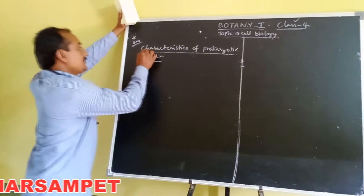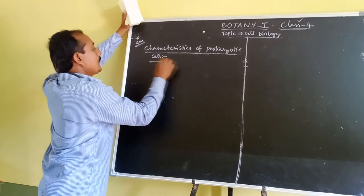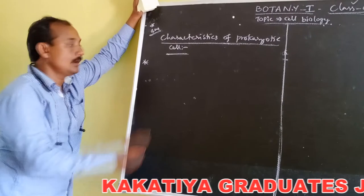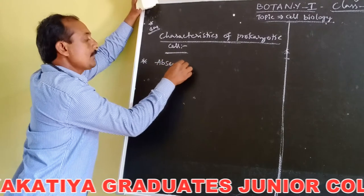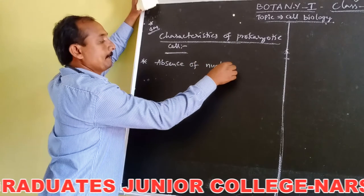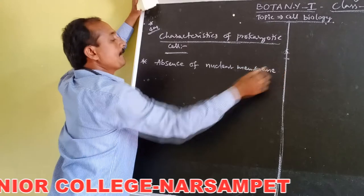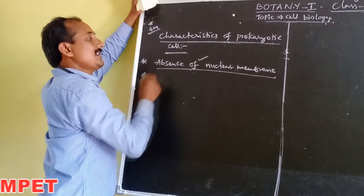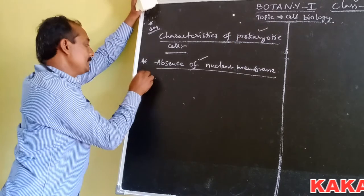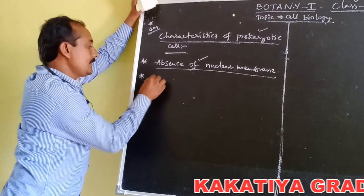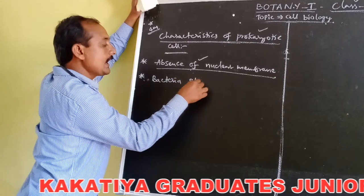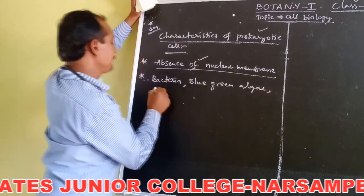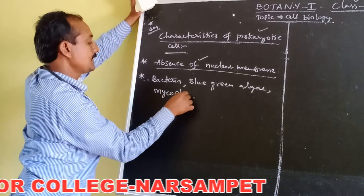Another important 4 marks question: characteristics of prokaryotic cells. Prokaryotic means the nucleus is present but nuclear membrane is absent. In the absence of nuclear membrane, the cells are called prokaryotic cells. Examples of prokaryotic cells are bacteria, blue-green algae, mycoplasma, and PPLO.